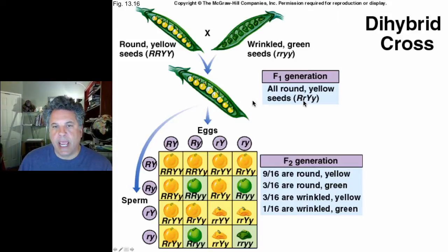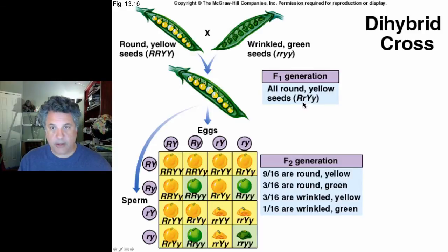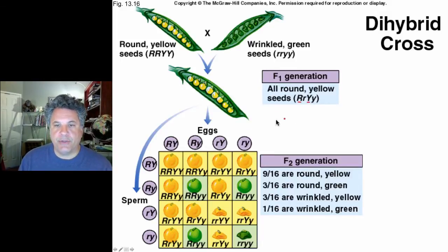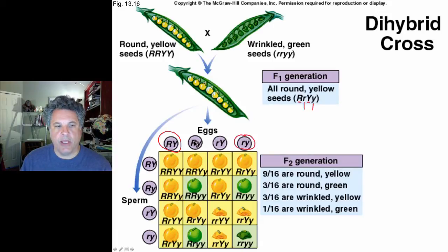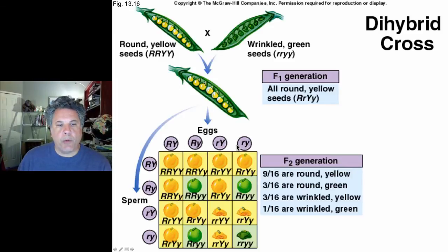There is independent assortment of alleles as they are segregated into reproductive cells. Consider what would happen if that weren't true — if the large R allele always went into a gamete accompanied by a large Y allele. In that case, we would only have two types of gametes: large R large Y, and little r little y. But that is not what Mendel got. Mendel found equal proportions of all four gamete genotypes.